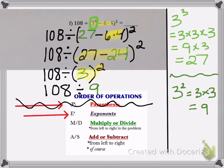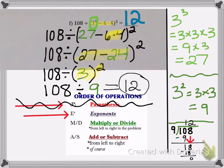So this becomes 108 divided by 9. So my division will be my last step. We'll perform the long division down at the bottom. And my final answer is 12.